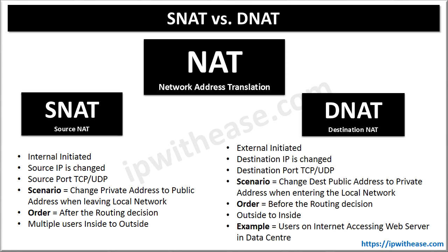DNAT stands for Destination Address Translation. Destination NAT changes the destination address in the IP header of a packet. It may also change the destination port in the TCP/UDP headers. The typical usage is to redirect incoming packets with a destination of a public address or port to a private IP address or port inside your network. Destination NAT is performed on incoming traffic where the firewall translates a public destination address to a private address. DNAT is a one-to-one static translation with the option to perform port forwarding or port translation.